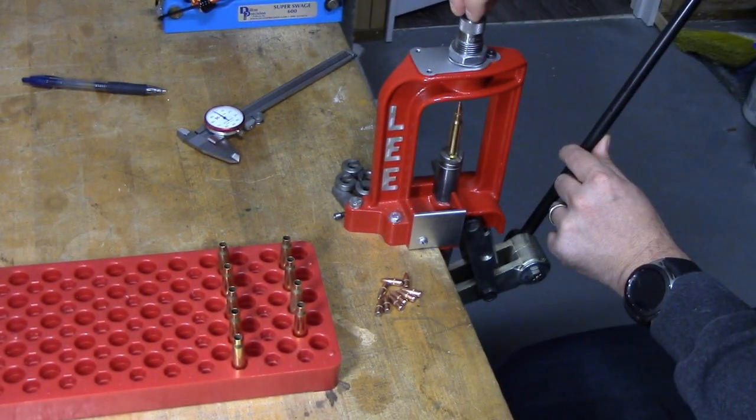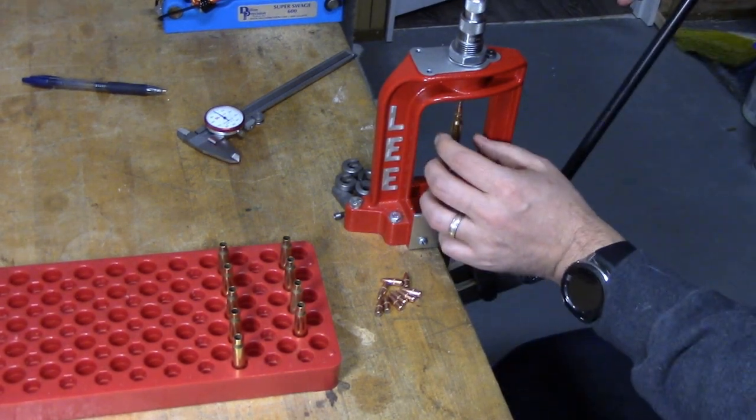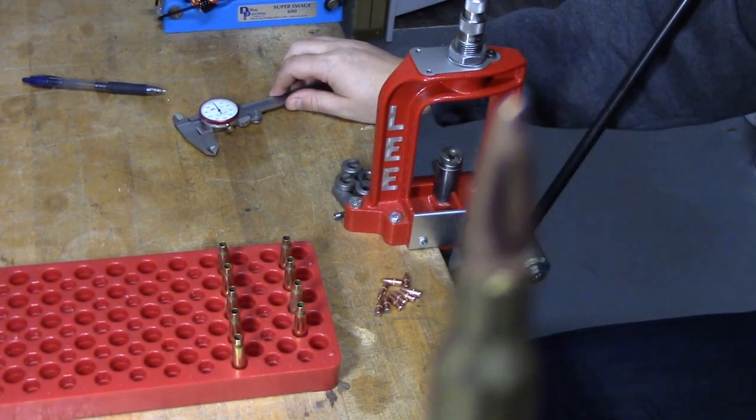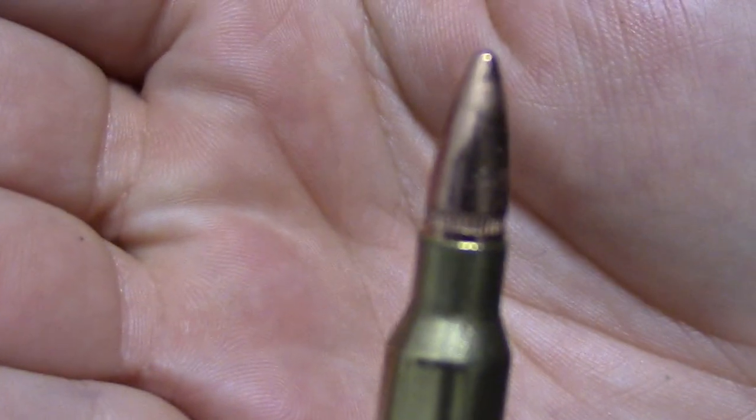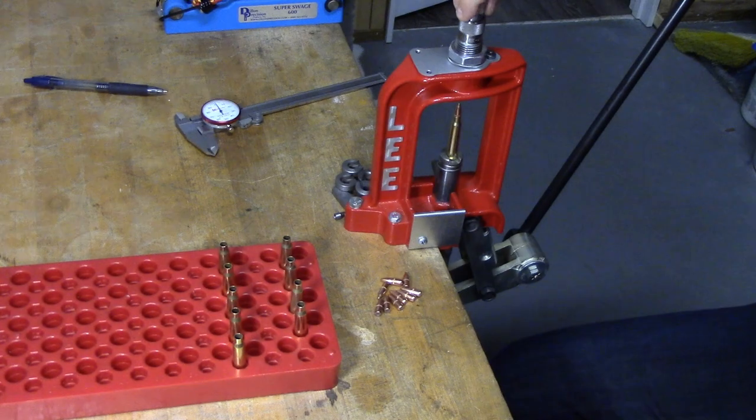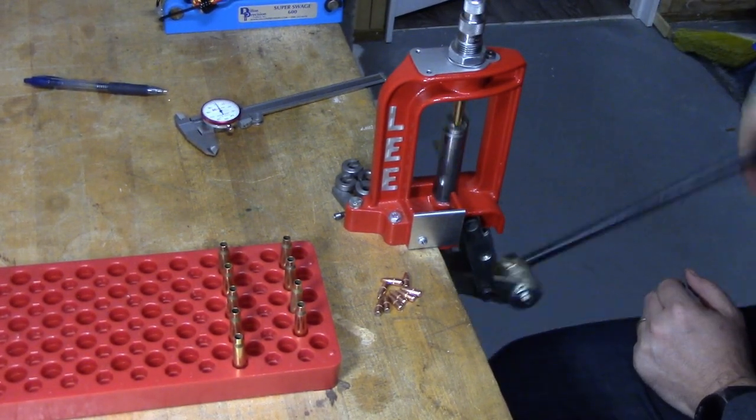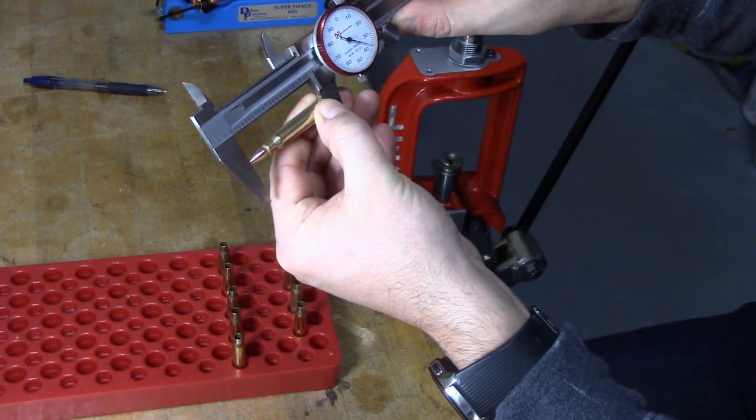Once you get closer to your desired length, you want to just slowly make increments because if you go too far, you're going to have to pull the bullet. Okay, you can see now we're getting very close. Alright, we're getting close now. Once again, we're aiming for 2.20. We're at 2.236.